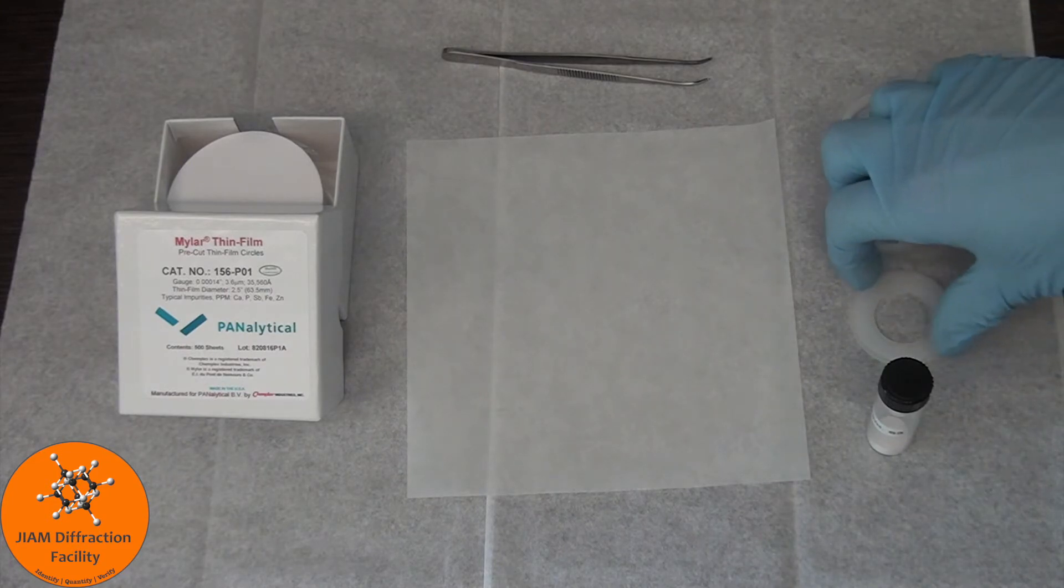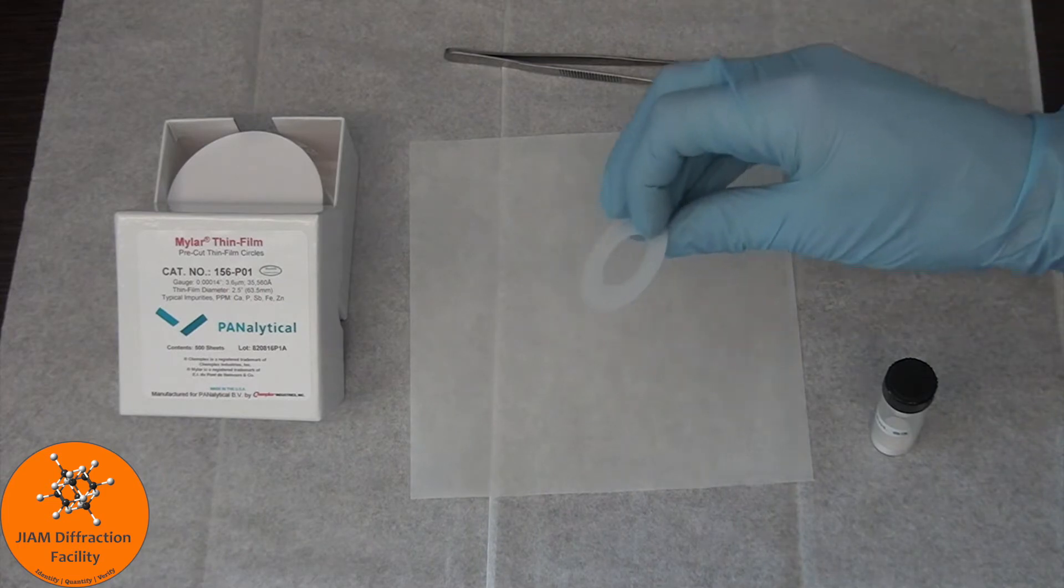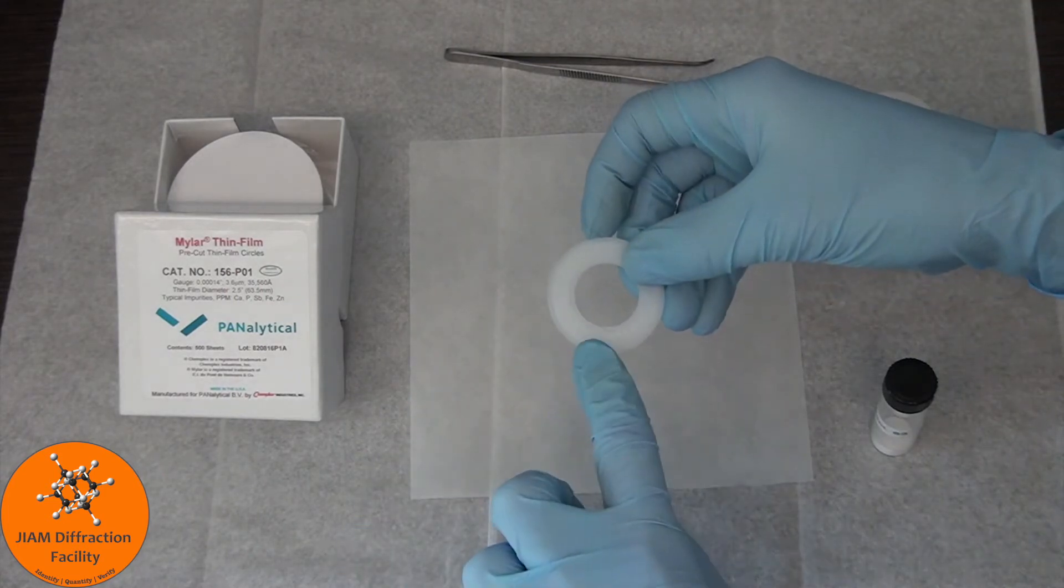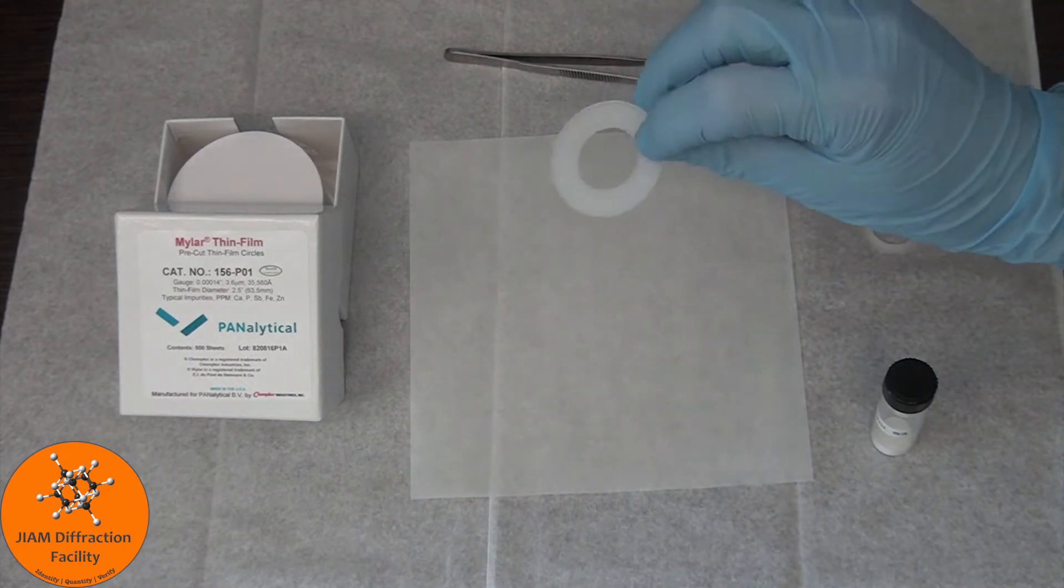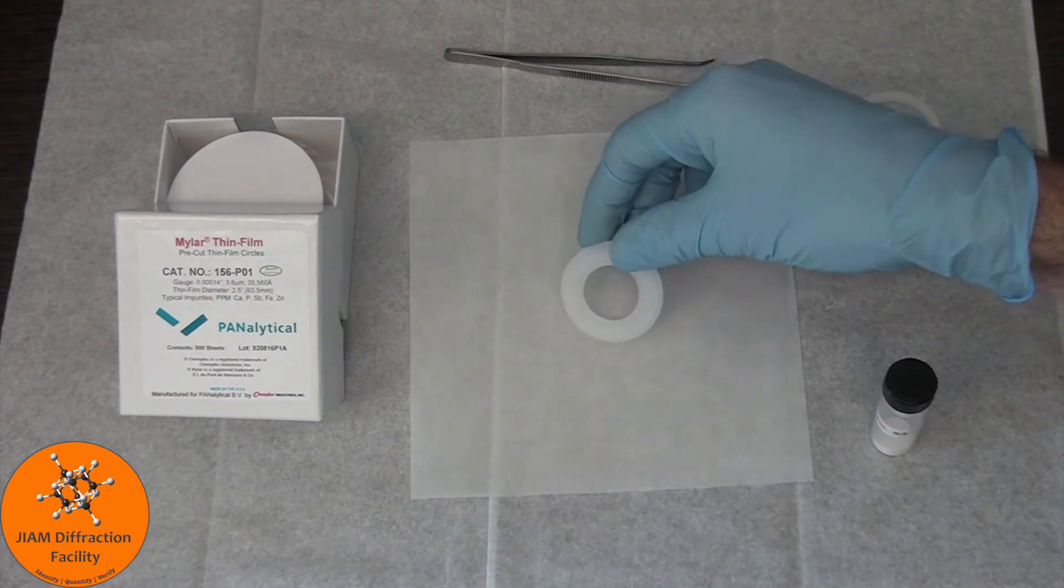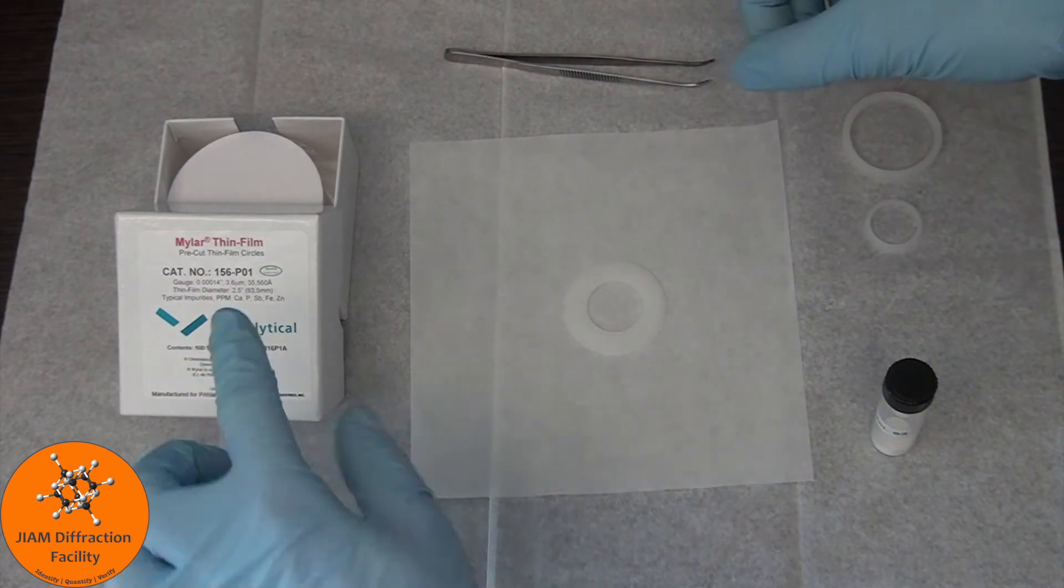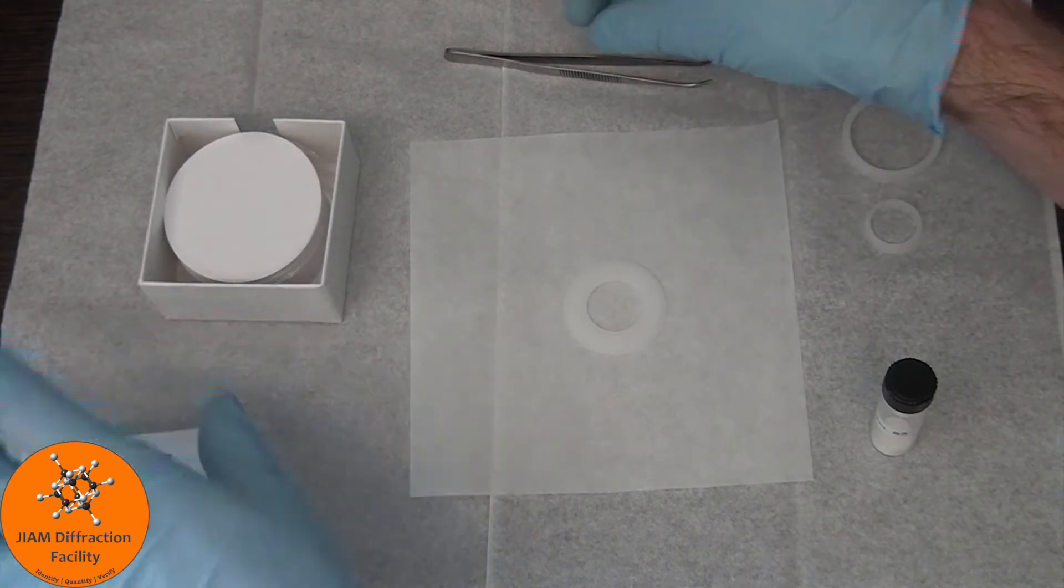We want to begin with this piece, which has a smooth side and a raised side. We want to have the smooth side face down, and then we want to take a piece of this Mylar thin film and place it on top.